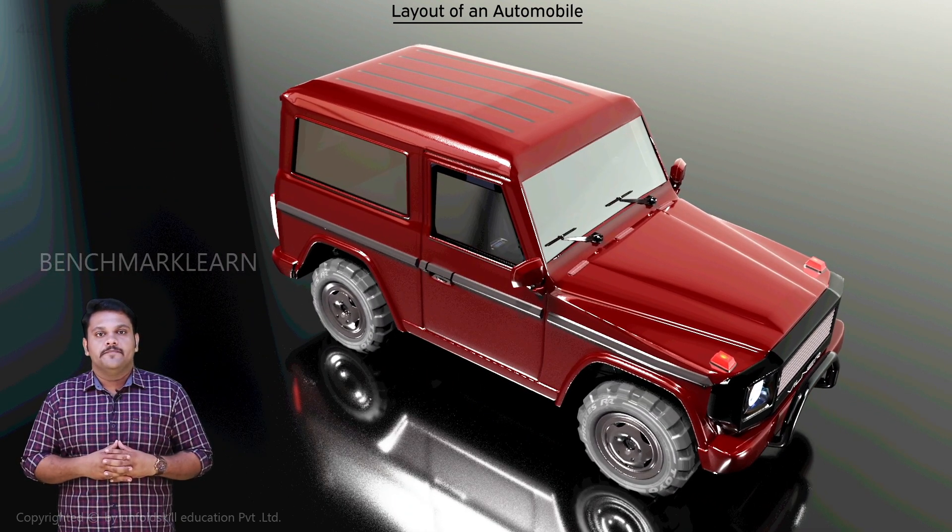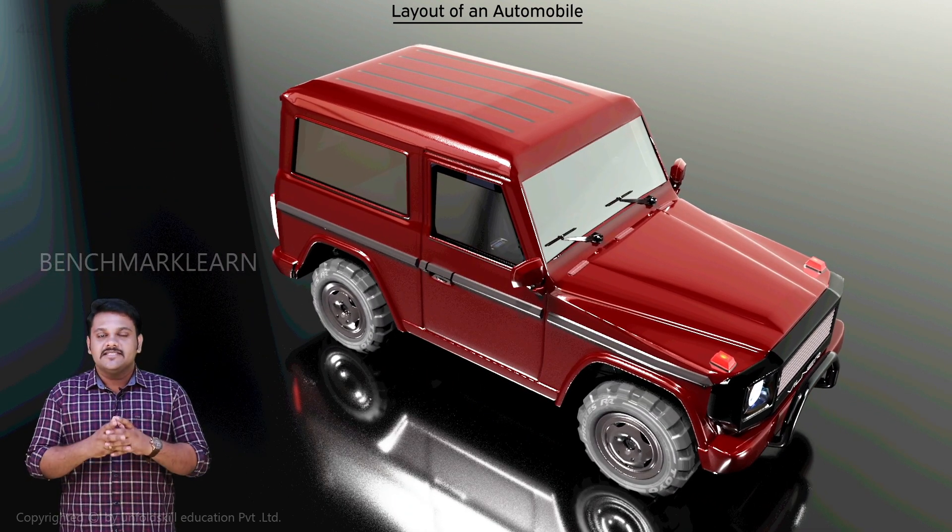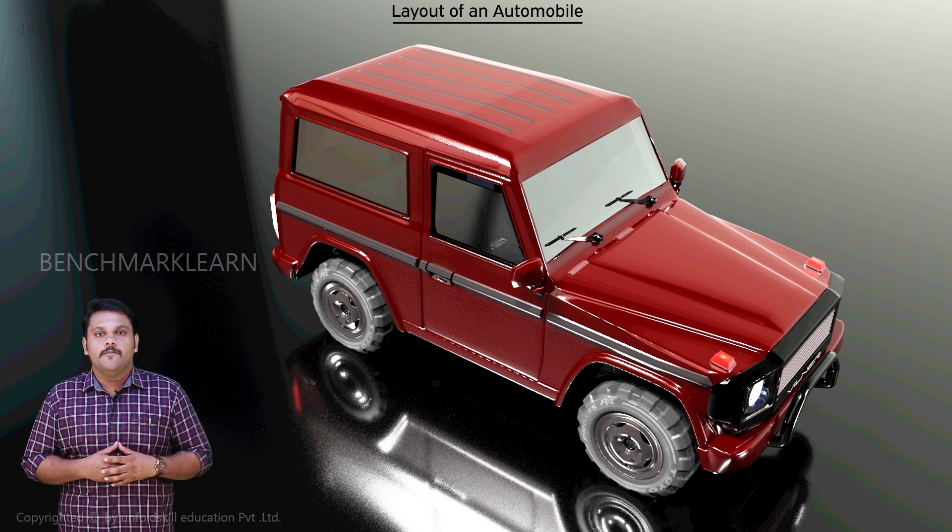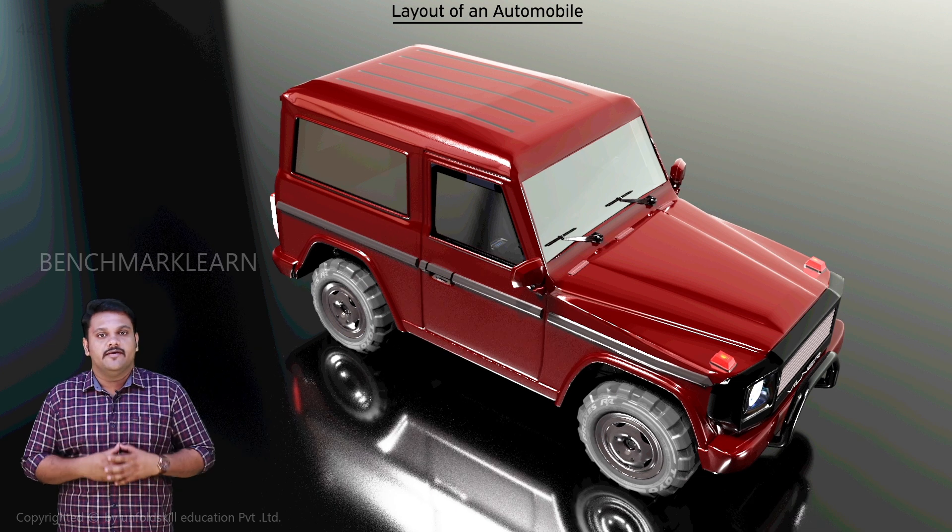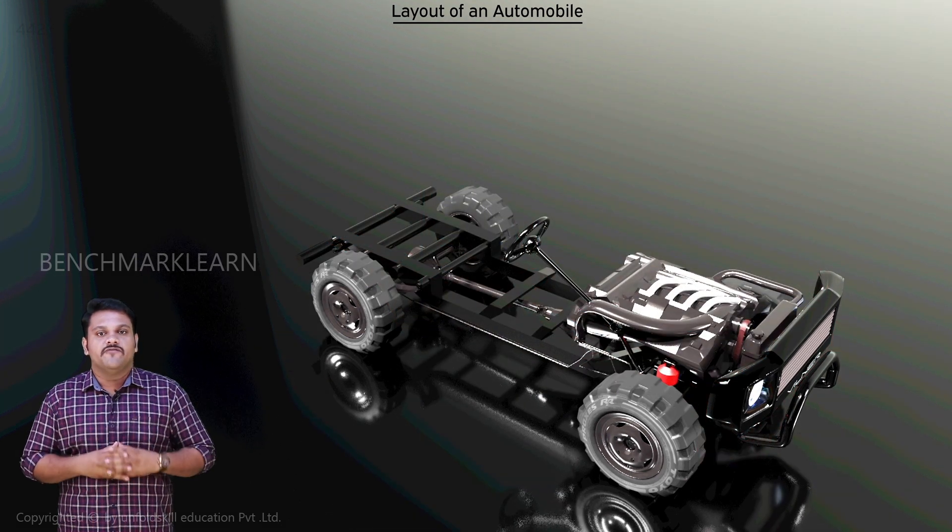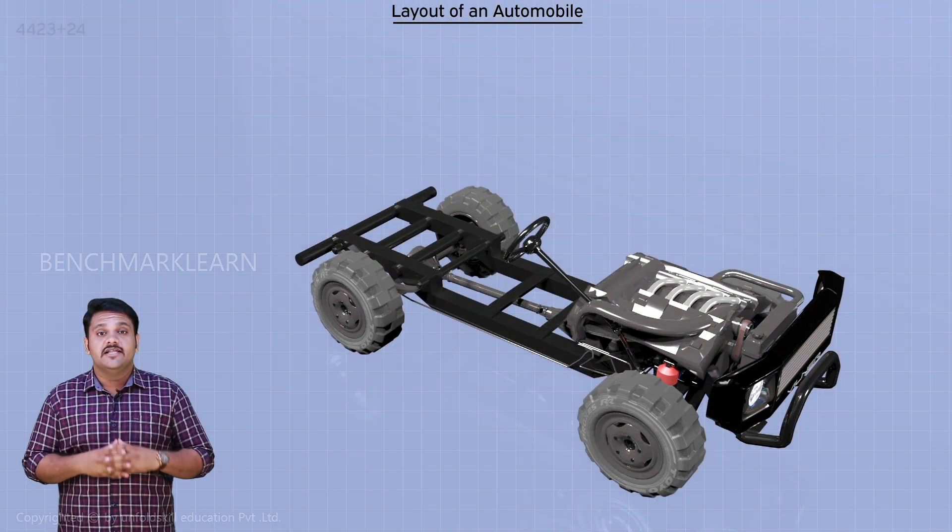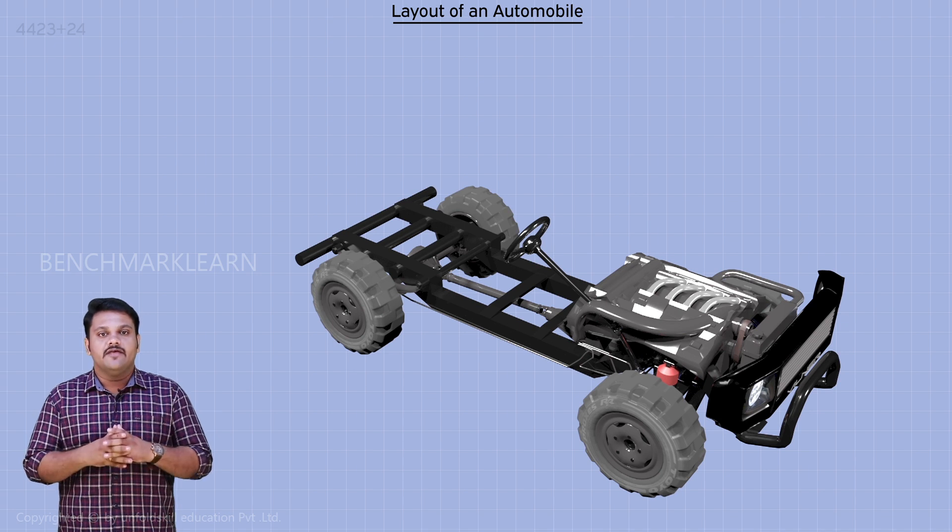Layout of an automobile. An automobile is the assembly of a large number of components. The major components of a four wheeler are shown here. It has a body on frame construction. The engine is front mounted type and drives the rear wheels.